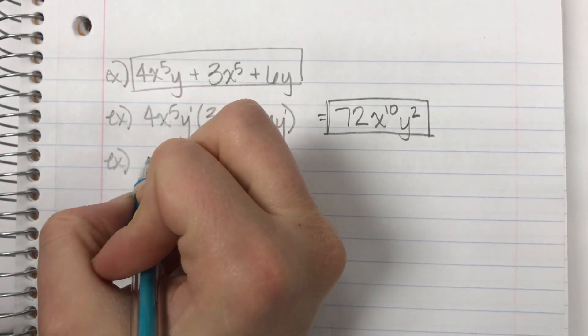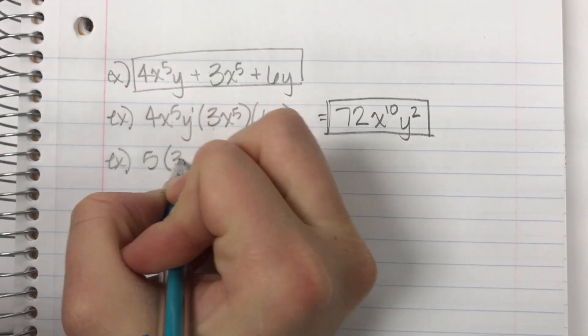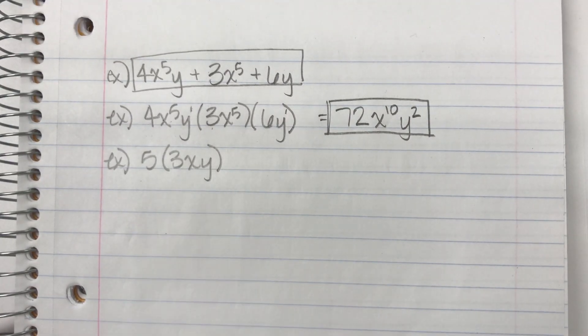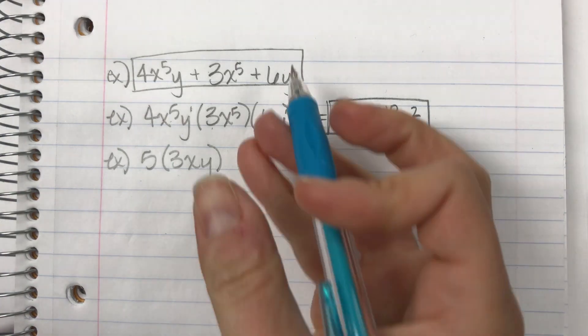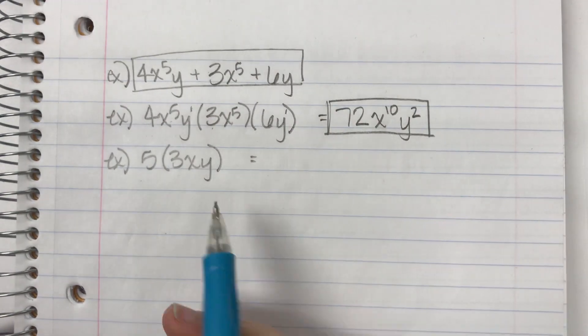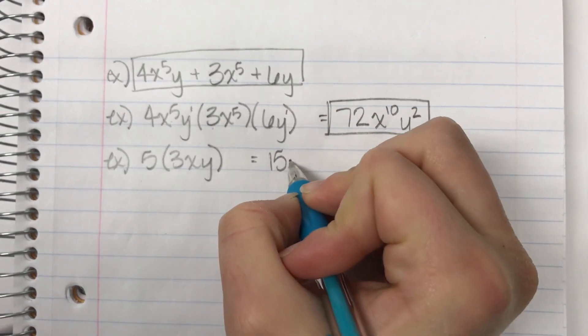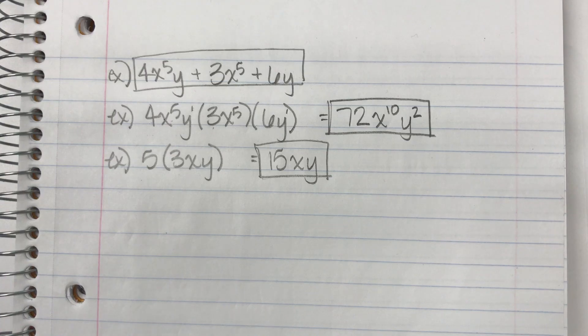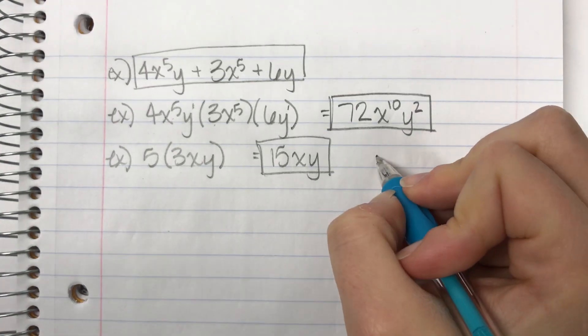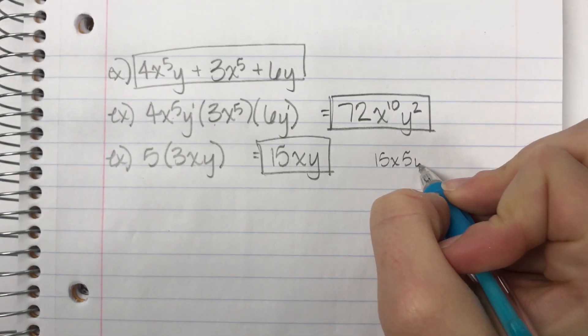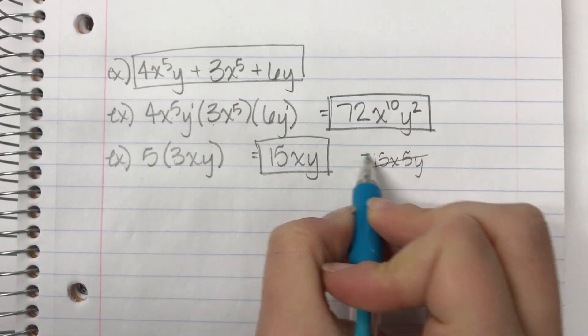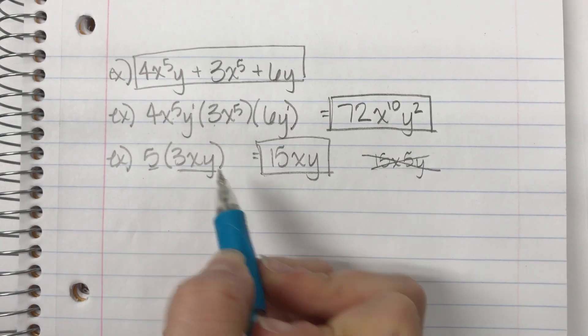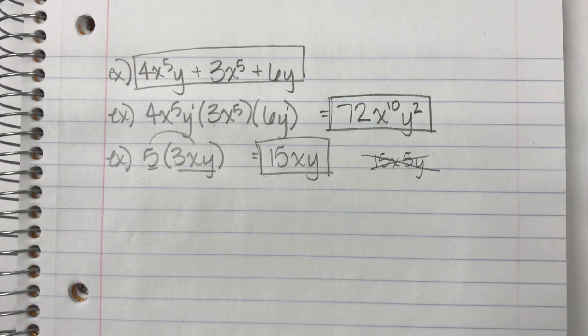All right, what if I say 5 times 3xy? They don't have to match. This is not an addition problem. They don't have to match. So I just multiply coefficients and get 15xy. I'm not distributing here. Some of y'all were really wanting to say like, oh, so that would be 15x5y. I'm not distributing in this situation. That's wrong. Because this is one term times one term. So I'm just multiplying that times that.